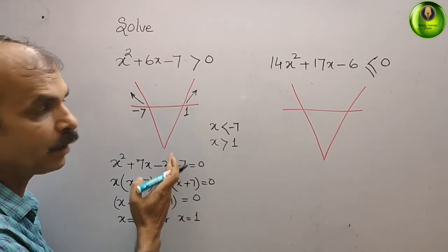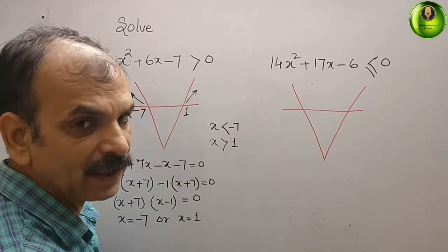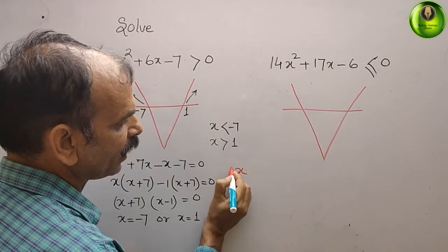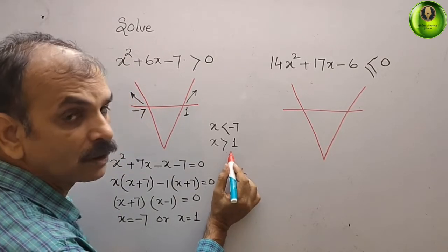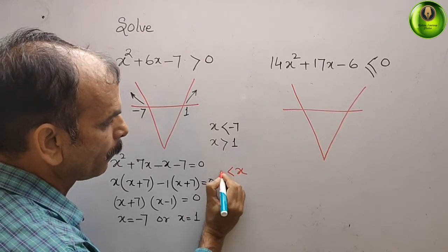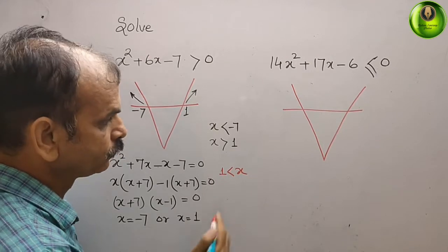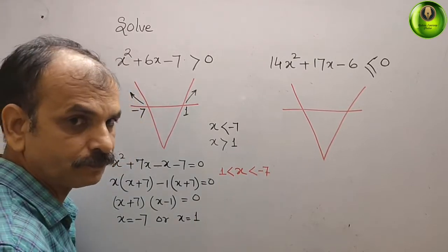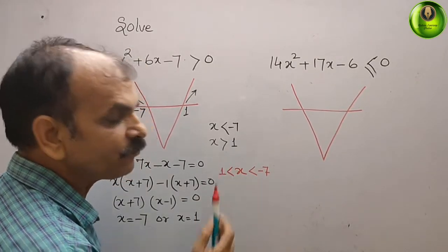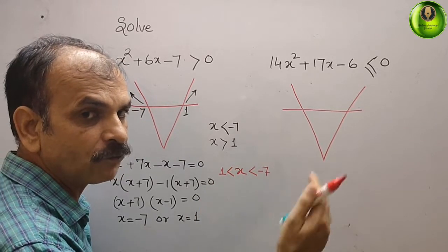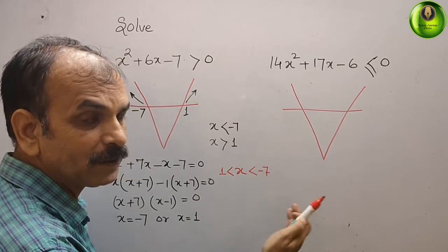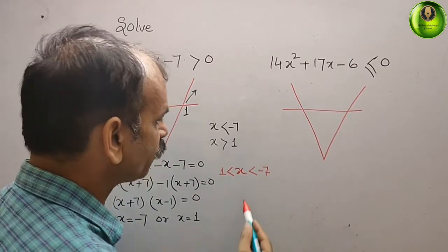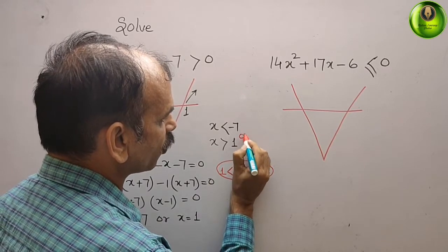We check the relationship between the two regions: x > 1 covers values like 2, 3, 4, and x < -7 covers values like -8, -9. There is a gap between them, so there is no overlap. Therefore, we write the solution as a union: x < -7 or x > 1.